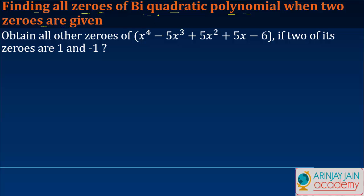A biquadratic polynomial is one in which the degree of the variable is 4. You are told to obtain all other zeros of the polynomial x^4 - 5x^3 + 5x^2 + 5x - 6, if two of its zeros are 1 and -1.